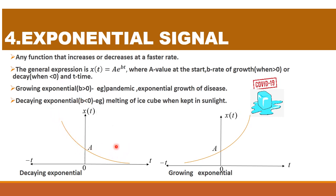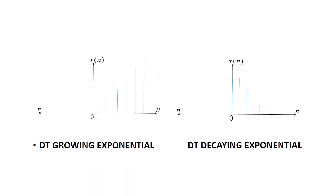We have two types of exponentials: growing exponential and decaying exponential. A real-world example of growing exponential is the COVID-19 pandemic — there was exponential growth of the disease because the virus multiplied rapidly. For decaying exponential, consider an ice cube placed in sunlight — it melts down quickly. The discrete time versions are similar: discrete growing exponential and discrete decaying exponential, with values in discrete nature.